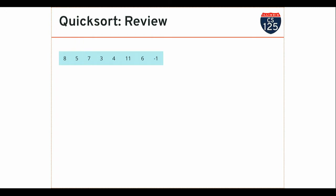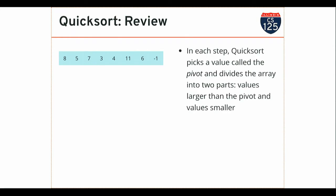Quicksort works differently than merge sort. Instead of breaking the problem down into smaller pieces and then solving it as we go up, quicksort actually sorts the array as it breaks it into smaller pieces. We're not going to finish implementing quicksort in class, mainly because it's fairly trivial once you have the partition part. The idea behind quicksort is that in every step, quicksort chooses a value from the array called a pivot, then partitions the array into two smaller subarrays — values smaller than the pivot and values larger than the pivot.